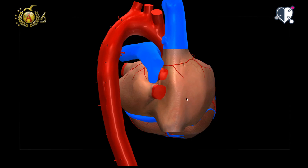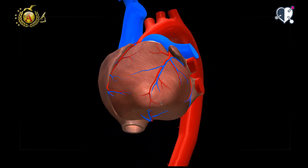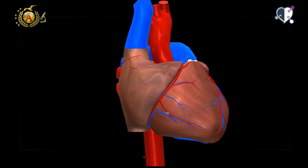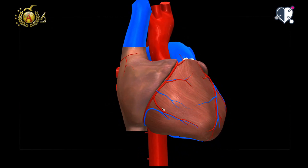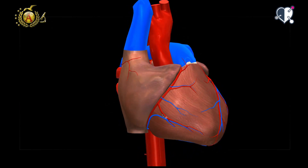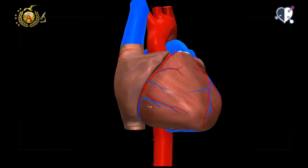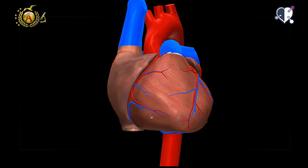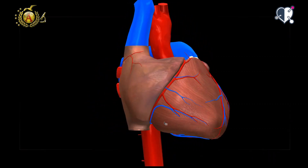The heart has a base that is mostly covered by the large vascular structures that enter and exit the heart, and an apex that corresponds to the tip of the left ventricle. Topographically, the apex is located at the fifth intercostal space, approximately along the midclavicular line.